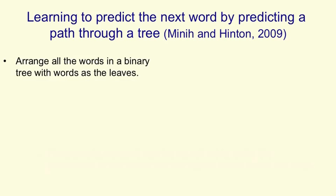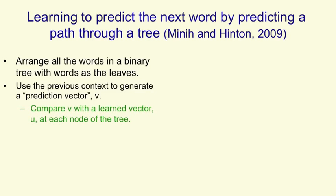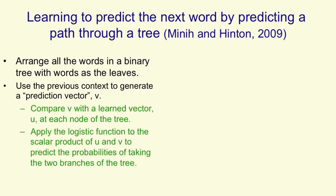A different way to avoid a great big softmax is to structure the words into a tree. We arrange all of the words in a binary tree with the words as its leaves. We then use the context of previous words to generate a prediction vector v. We compare that prediction vector with a vector that we learn for each node of the tree. The way we do the comparison is by taking a scalar product of the prediction vector and the vector that we've learned for the node of the tree, and then we apply the logistic function to that scalar product, and that will give us the probability of taking the right branch in the tree. And 1 minus that gives us the probability of taking the left branch.